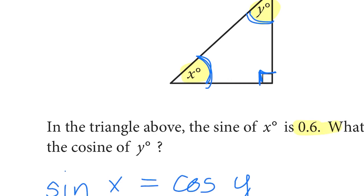So here, they give us sine of x is 0.6. They want the cosine of the other, which means that that's also going to be 0.6. We can go ahead and plug that in, bubble it in and move on.